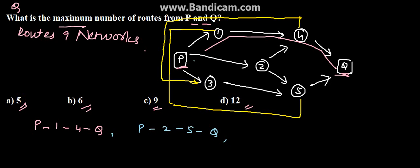This is P, 2, 5, Q - this is the second route. The third route can be P, 2, 4, Q. P, 2, 4, and Q - this is the third route.